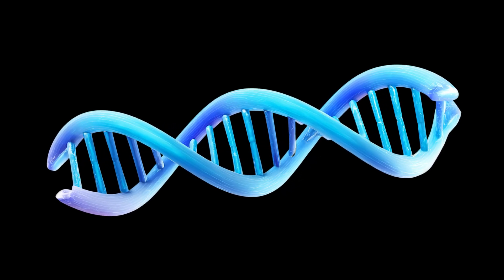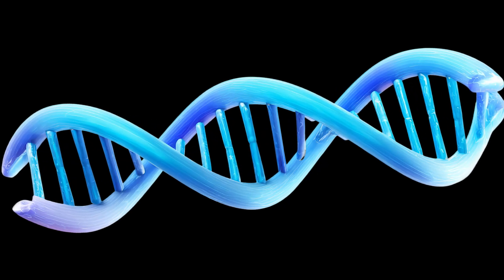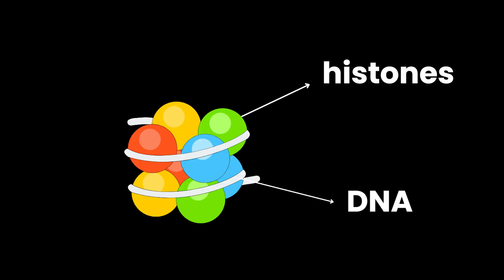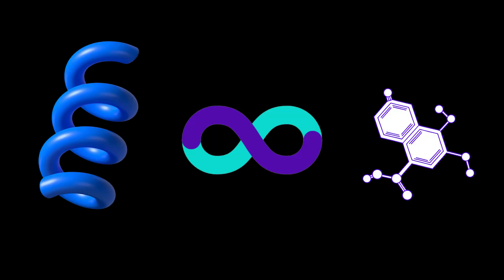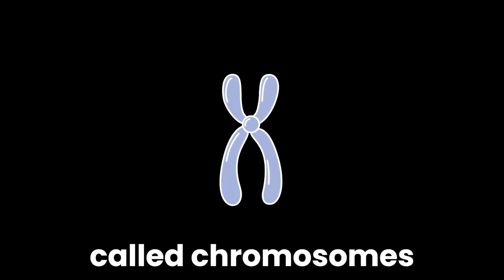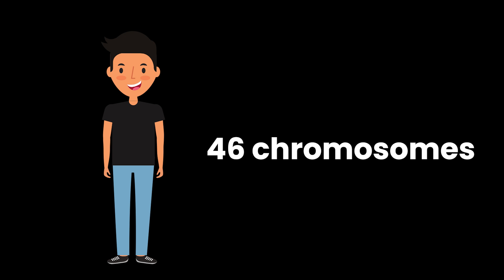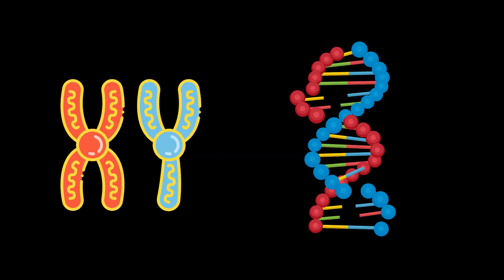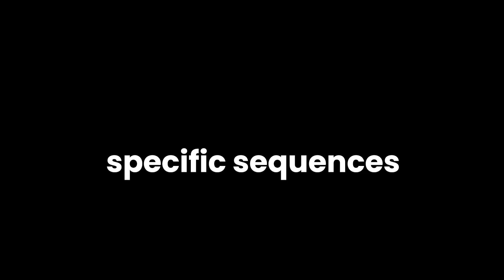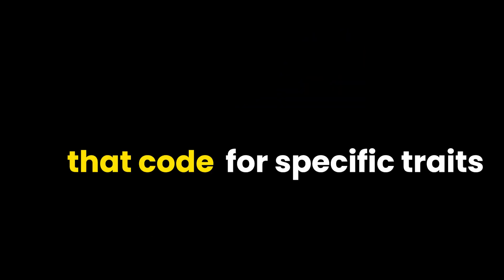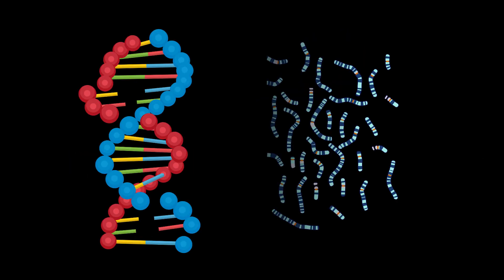Now, DNA is extremely long. If you stretched out the DNA in one cell, it would be about two meters long. But your cells are microscopic, so DNA has to fold tightly. It wraps around proteins called histones, forming coils, loops, and condensed structures called chromosomes. Humans have 46 chromosomes, 23 from each parent. These chromosomes carry genes, which are specific sequences of DNA that code for specific traits. A gene isn't the trait itself, it's the instructions for building the trait.